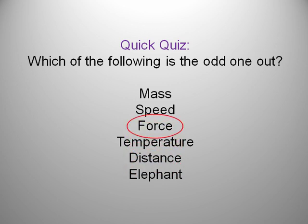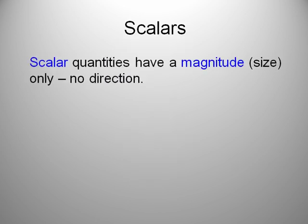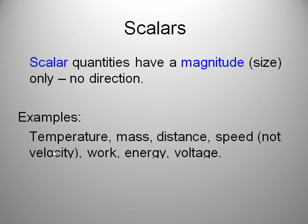Okay, you may have been thinking elephant is an animal, nothing else is an animal. That's true. In that case, you would be right. But I was thinking of something different. The case here is all of these are scalar quantities except force. So let's define what the difference is between scalars and vectors. Scalars are quantities that have just magnitude. There's no direction associated with them. For example, these right here are scalar quantities. Temperature, mass, distance, speed, and not velocity. Work energy, voltage. And yes, elephant.